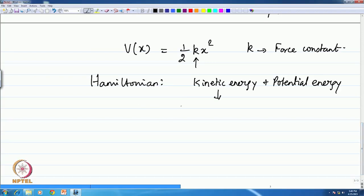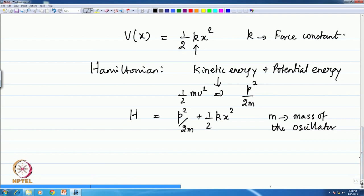The kinetic energy is half m v² or if you want to write it using momenta it is p² by 2m. Therefore, the Hamiltonian in a classical sense is p² by 2m plus half k x², where m is the mass of the oscillator.